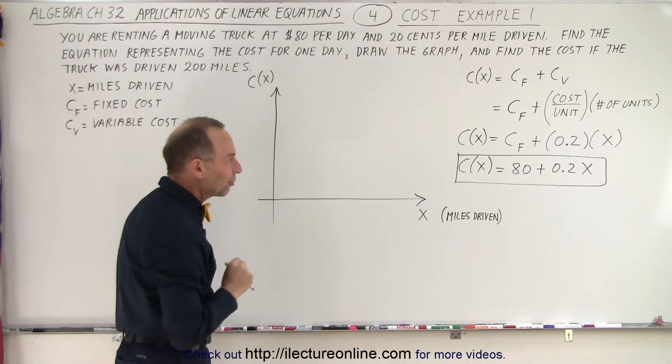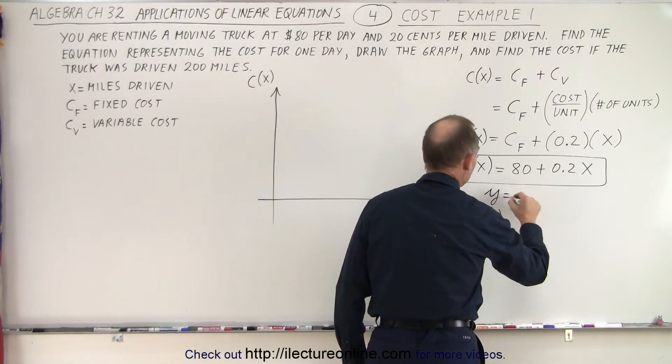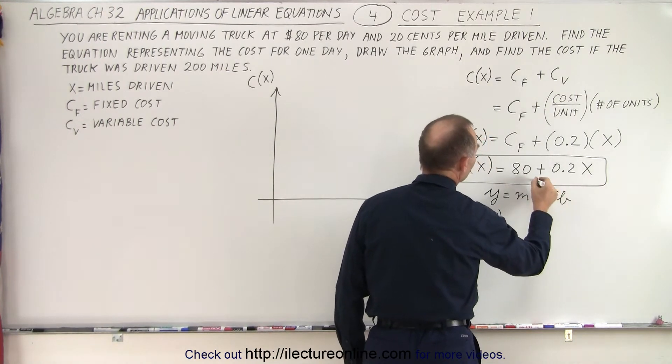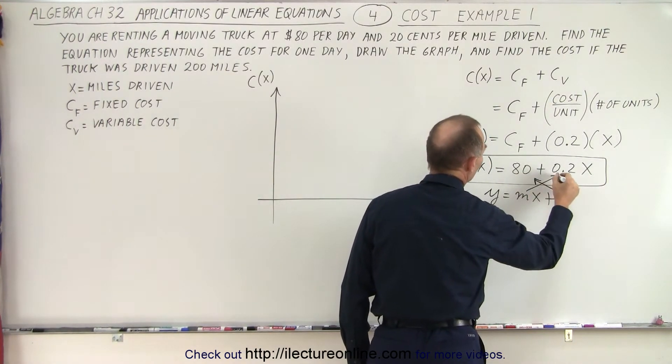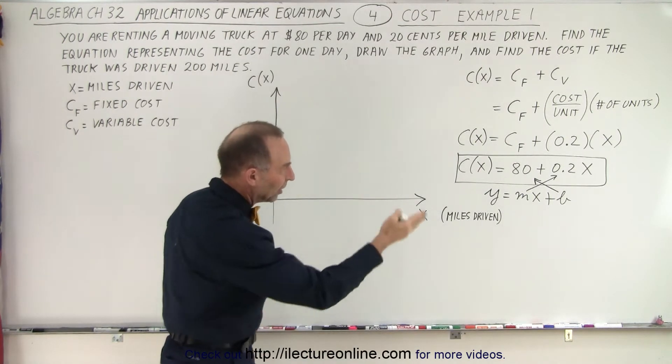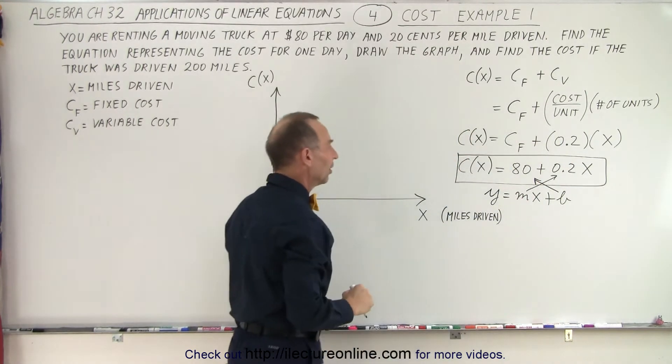Now what if we want to graph that? Well, this is exactly like a y equals mx plus b. y equals mx plus b. In this case, b is the 80 and m is the 0.2. So the numbers are somewhat reversed there. But we like to write the cost as fixed cost first and variable cost next.